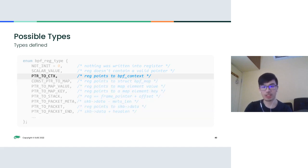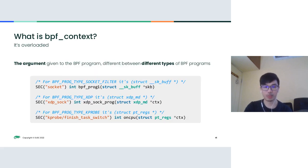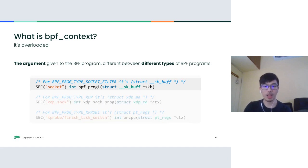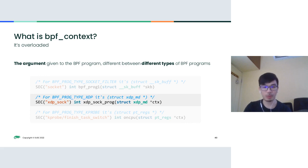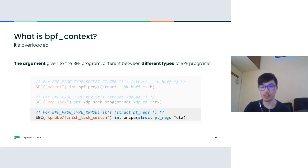The most interesting type is the pointer-to-context, which is a BPF context. This type is actually very overloaded — it can differ from program to program depending on the type of BPF program you're dealing with. For a BPF socket filter type, pointer-to-context is a pointer to `sk_buff`. For XDP programs it's a pointer to `xdp_md`. For kprobes it's a `pt_regs`.